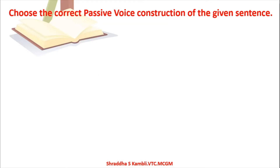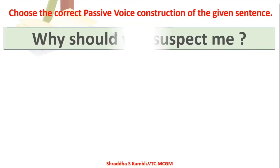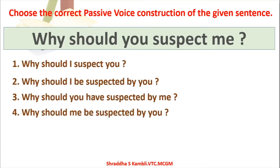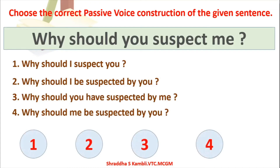One more example: 'Why should you suspect me?' The options are: (1) Why should I suspect you? (2) Why should I be suspected by you? (3) Why should you have suspected by me? (4) Why should me be suspected by you? Think carefully and look at the solutions. The correct answer is the second one: 'Why should I be suspected by you?'